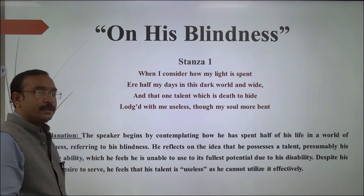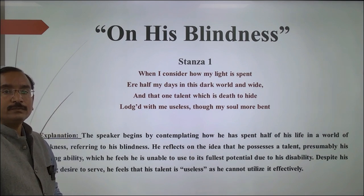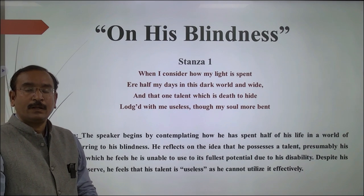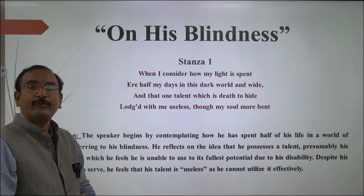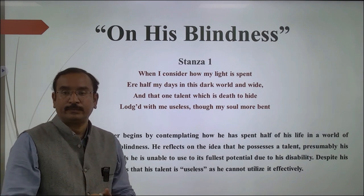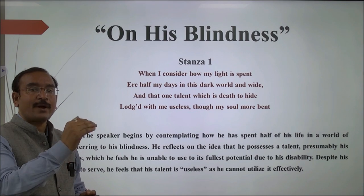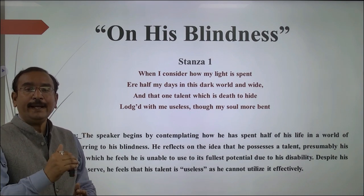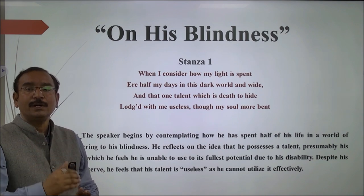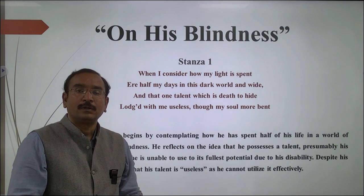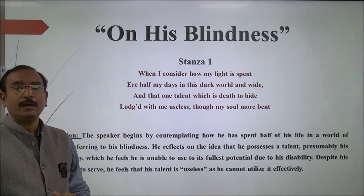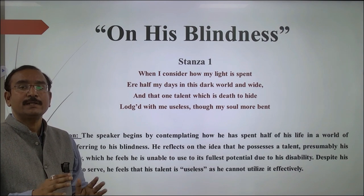'On His Blindness' is a sonnet in the form of the Petrarchan sonnet. It has 14 lines divided into two parts: the first part is 8 lines, called the octave, and the last 6 lines are called the sestet. The rhyme scheme of this poem is A-B-B-A-A-B-B-A-C-D-E-C-D-E.